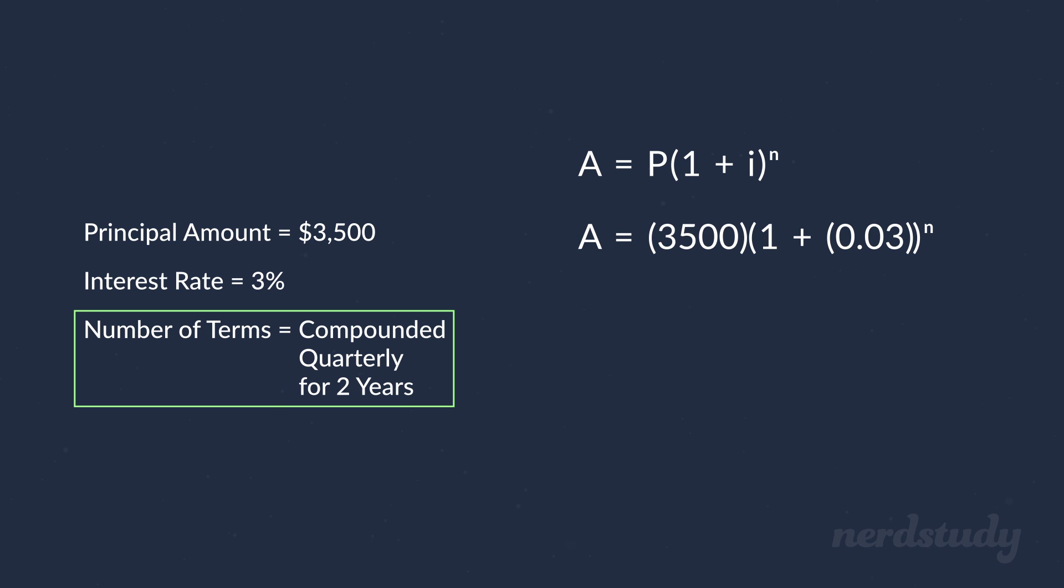Well, since it's being compounded quarterly, and there are 4 quarters in a year, to represent 2 years, we would plug in 4 times 2 as our N. Therefore, this would be our equation, and simplifying this gets us 1.03 in the brackets here to the exponent of 4 times 2, which is 8.